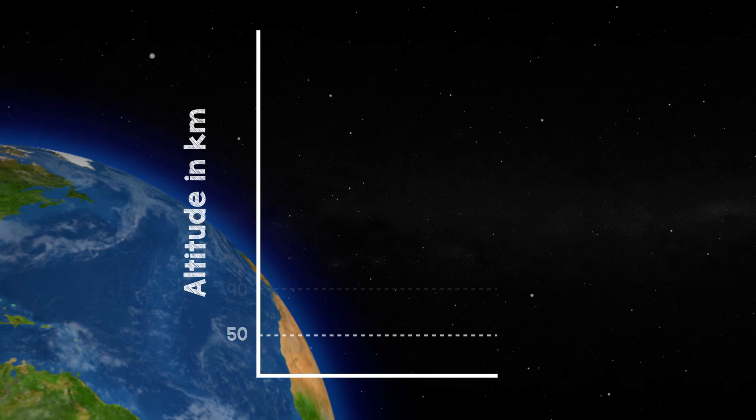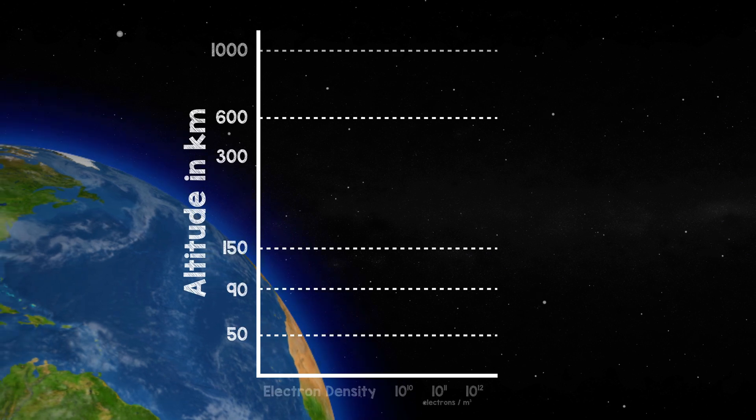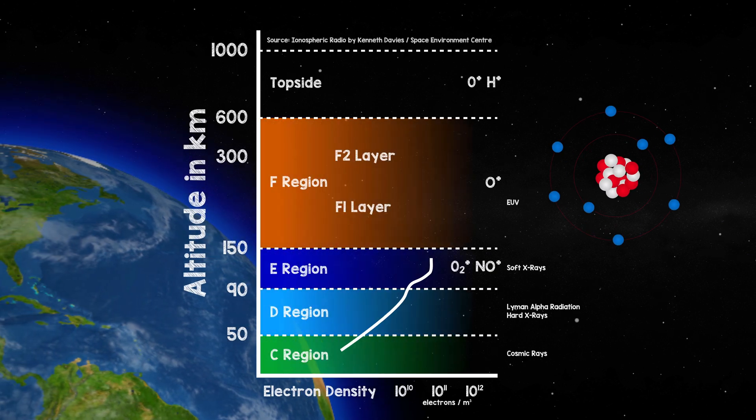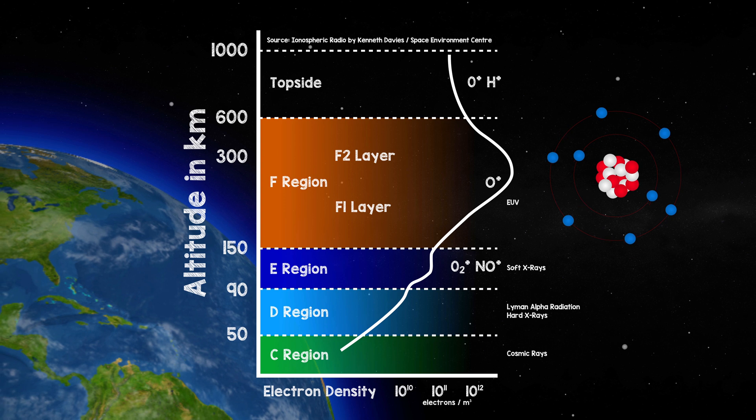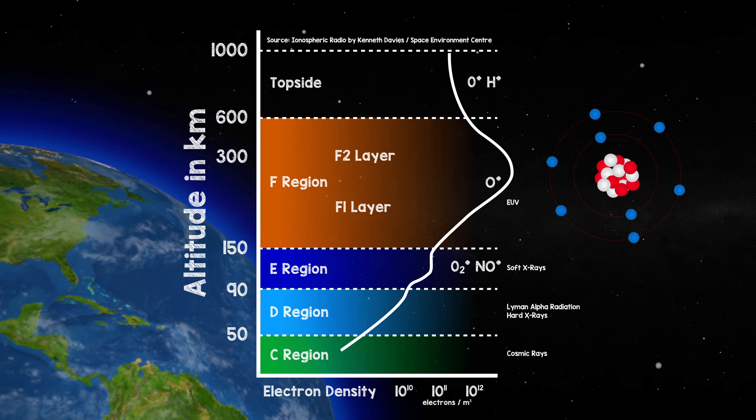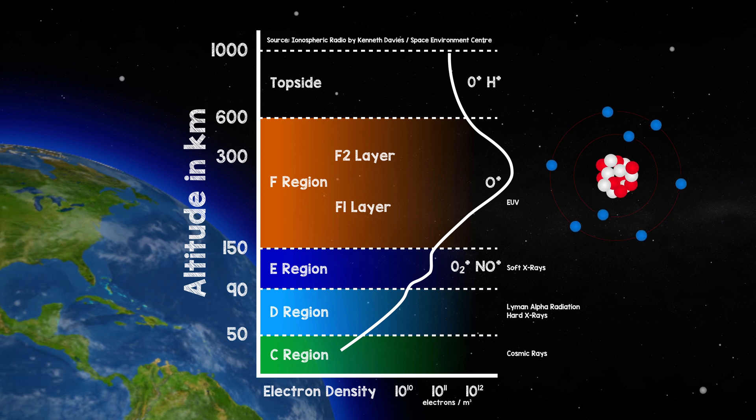Oxygen becomes the dominant atom in the F region of the ionosphere, between 200 and 600 kilometres above the Earth.